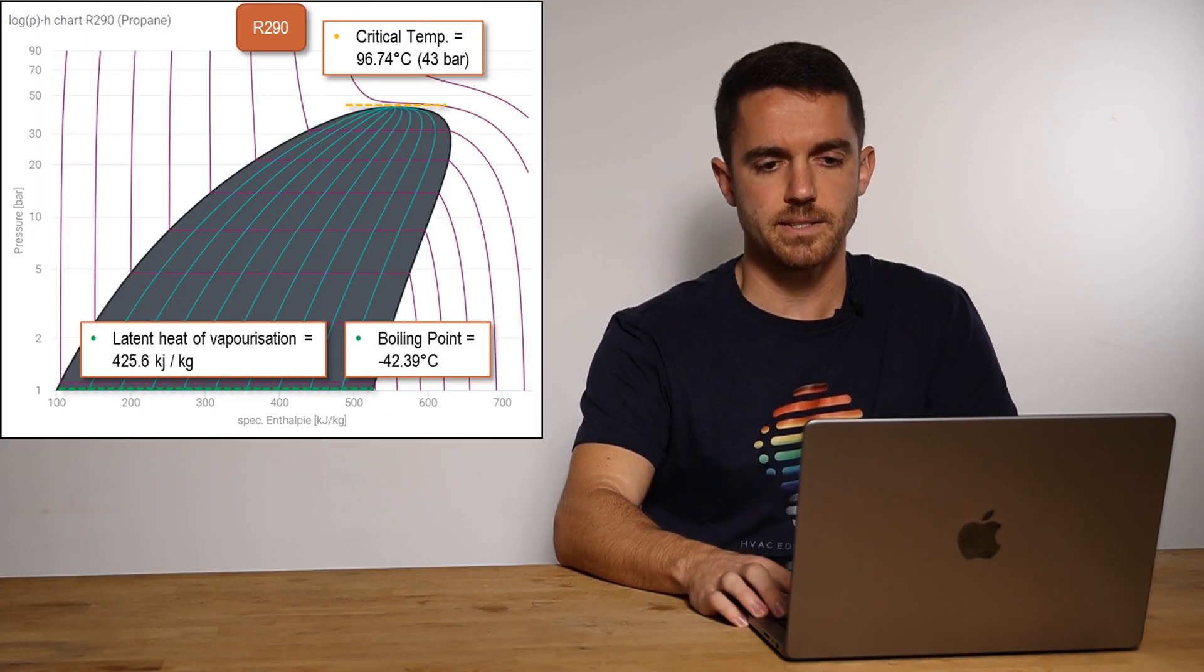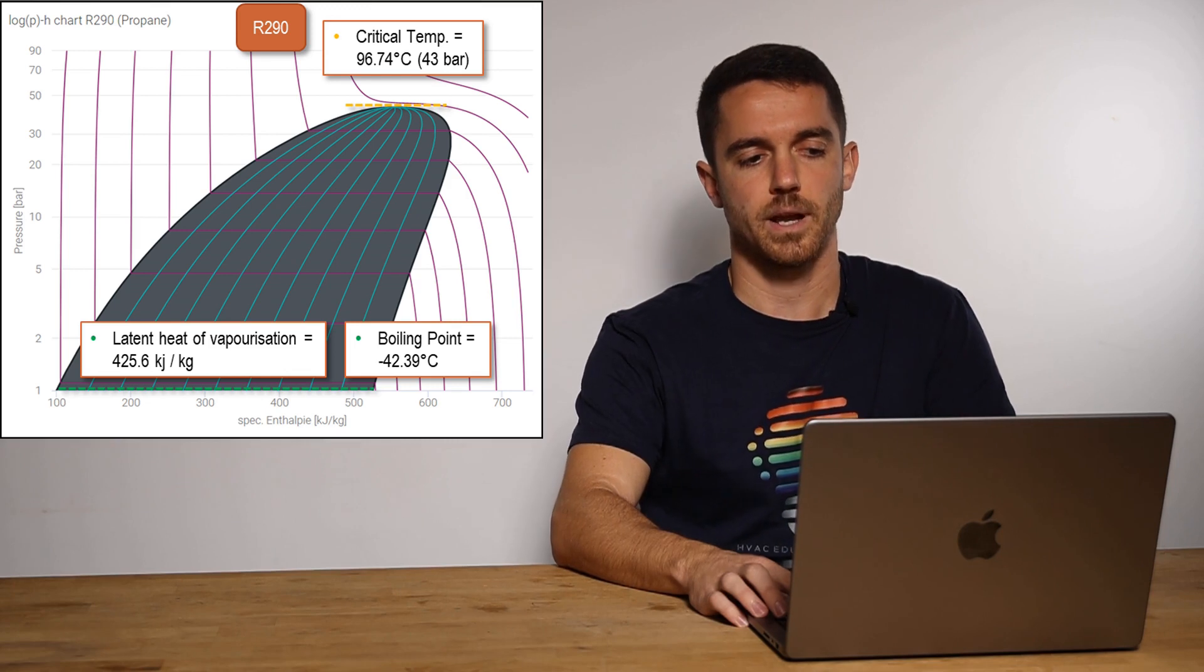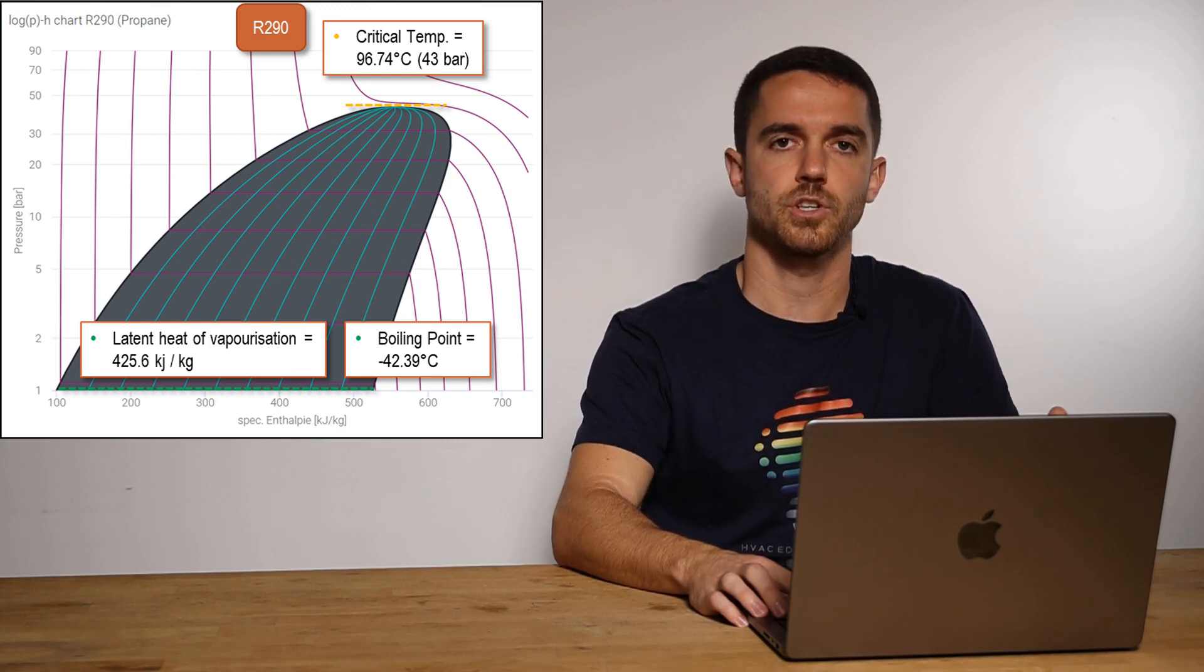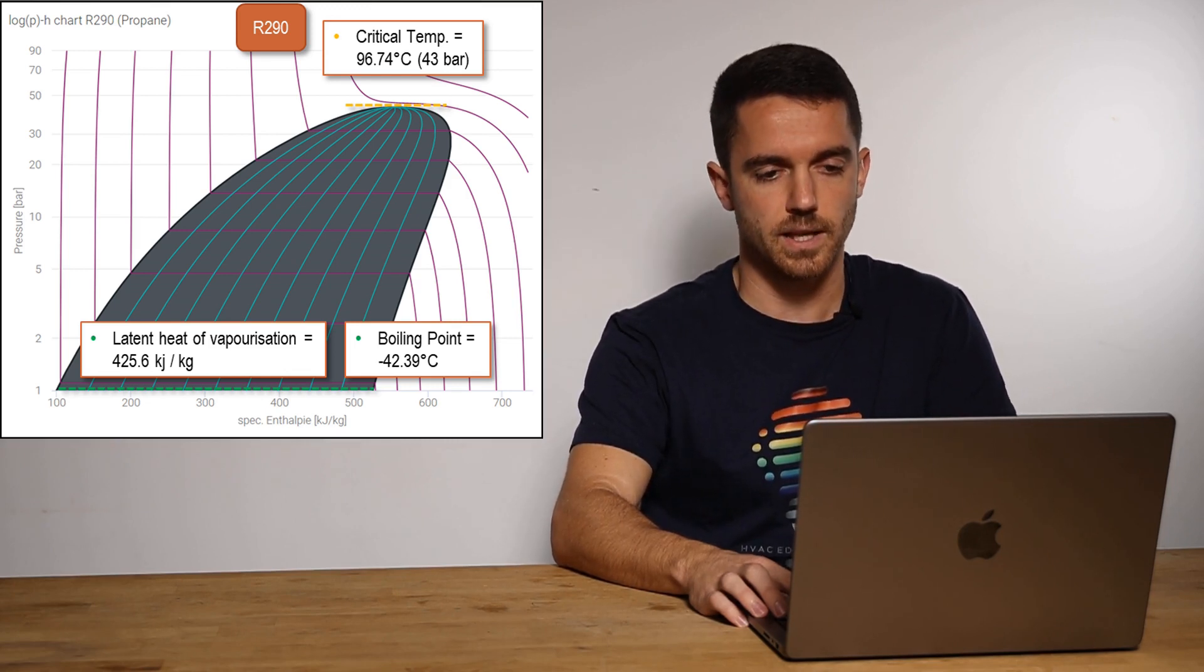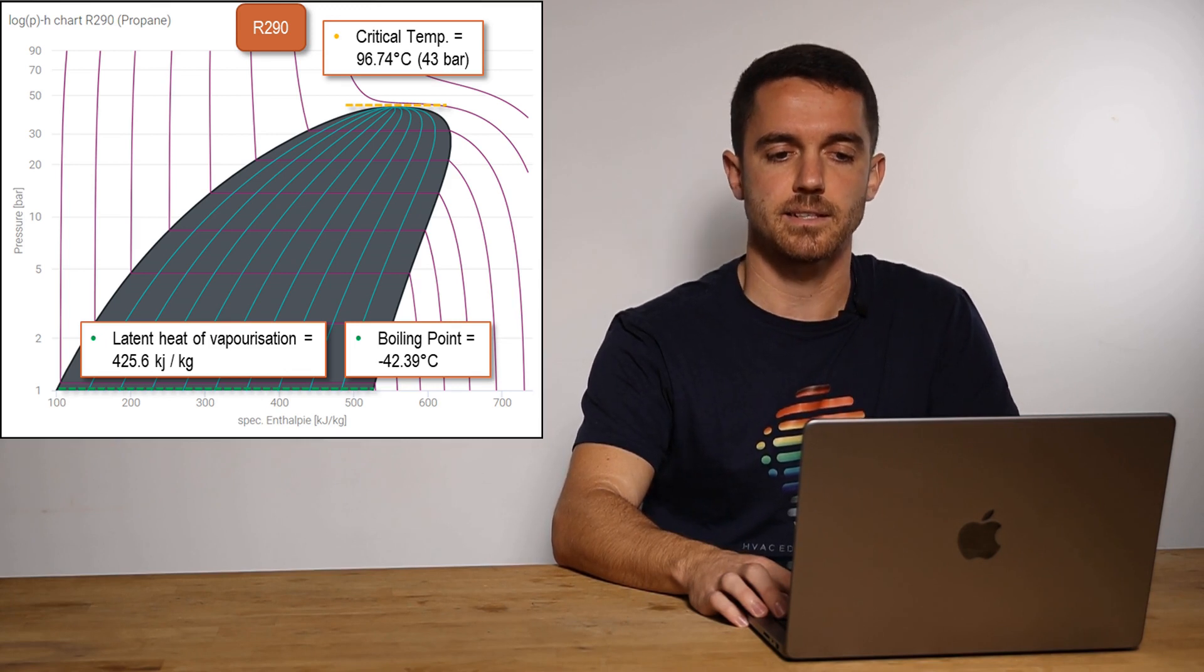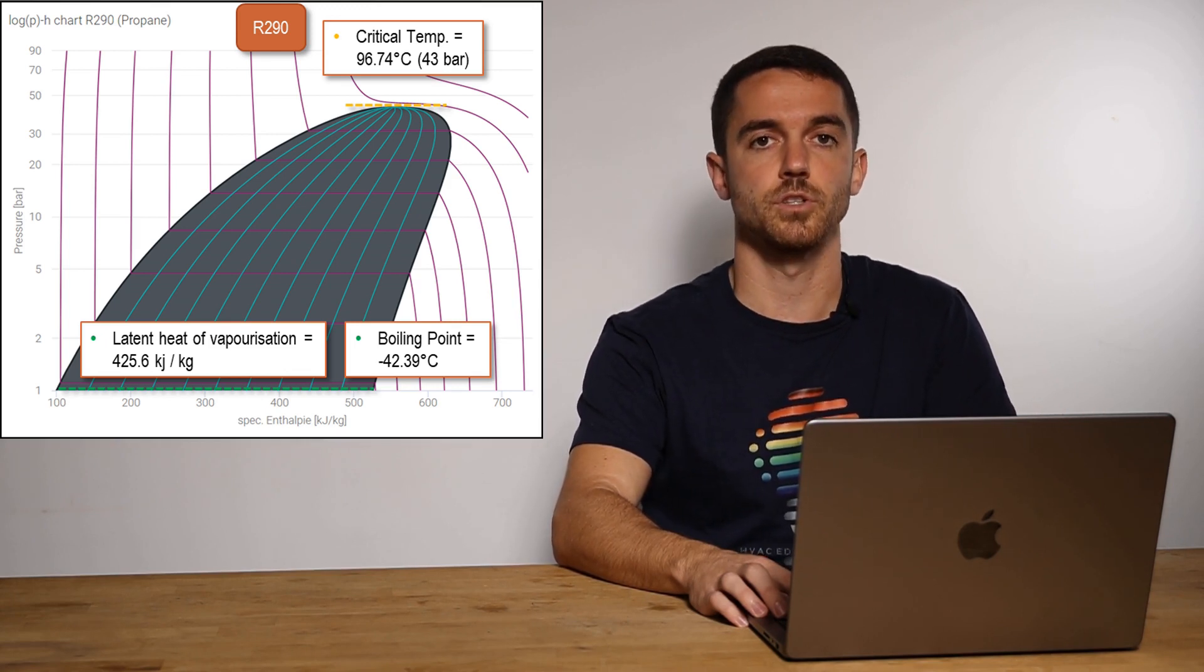What is the main advantage of propane in our heat pump system? It is critical point or critical condensation point. It means that highest temperature and pressure at which R290 can condense is 96 degrees Celsius and 43 bars.